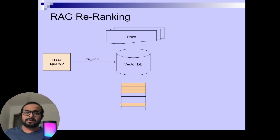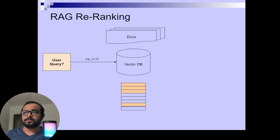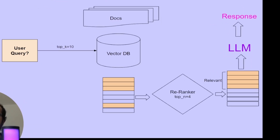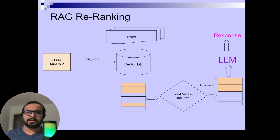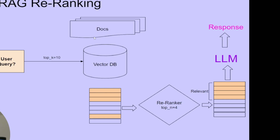You could send all 10 search outputs from your vector database to your LLM, but that may not be effective in terms of LLM context window or cost, because it will consume a lot of tokens, cost more, and slow down your application performance. Instead, using a re-ranking approach, you implement a re-ranker that takes all 10 outputs and — if you select top N equal to four or three based on the re-ranker configuration — it ranks the documents, fetches the most relevant information, and keeps it on top. You then pass these top results to the LLM, which creates a better response specific to the user query.